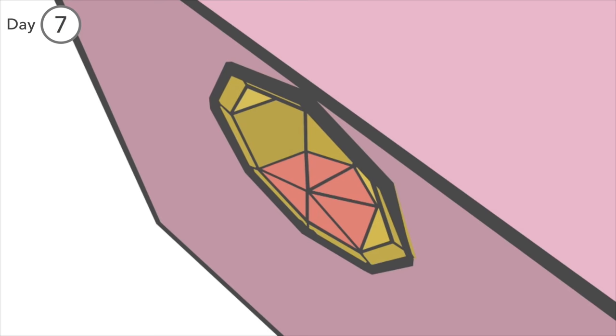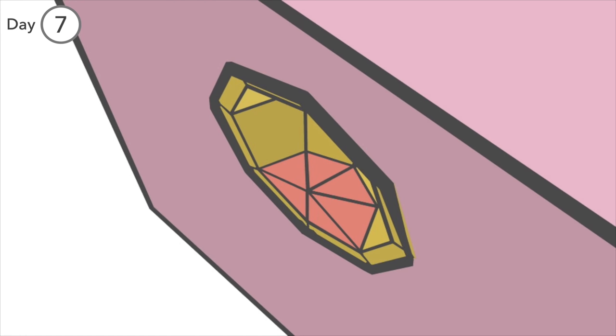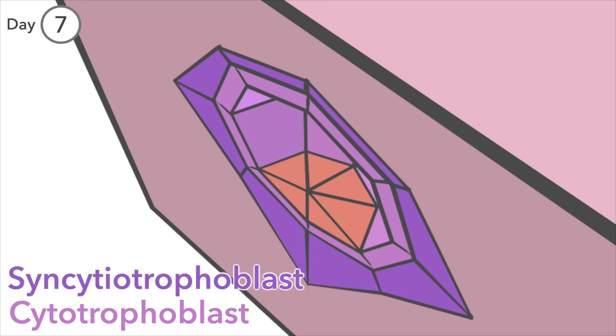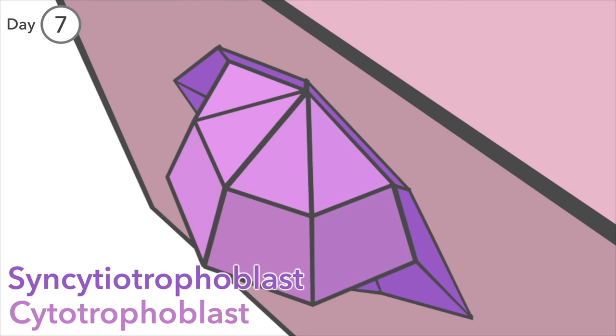Day 7. Meanwhile, the trophoblast begins to transform into two separate parts: cytotrophoblast on the inside, and syncytiotrophoblast on the outside. Day 8. The latter is one cell with many nuclei.